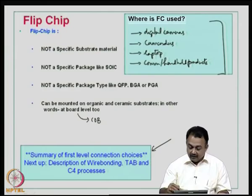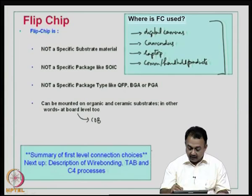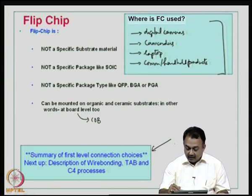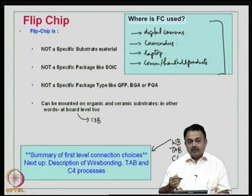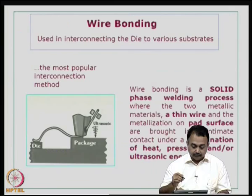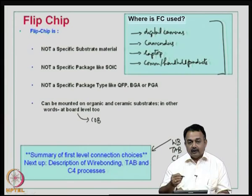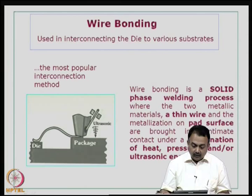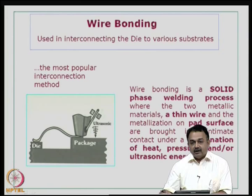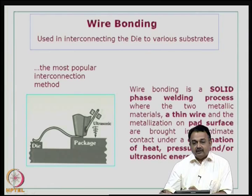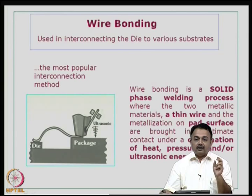What we have seen now is the summary of all the first level connection choices. We have seen exclusively what is a wire bond, what is TAB, and what is a flip chip or C4 process. Now, I am going to give some more inputs on each of these first level connection choices so that you can understand the process sequence. Wire bonding is used in interconnecting the die to various substrates and it is the most popular interconnection method. It is a solid-phase welding process where the two metallic materials use a thin wire — the thin wire can be gold, aluminum, or today copper is also used — and the metallization on the pad surface is also ready for this bonding process.